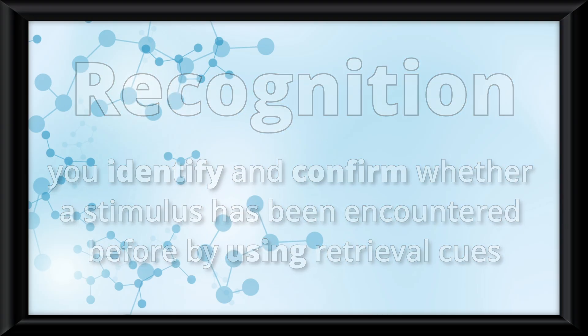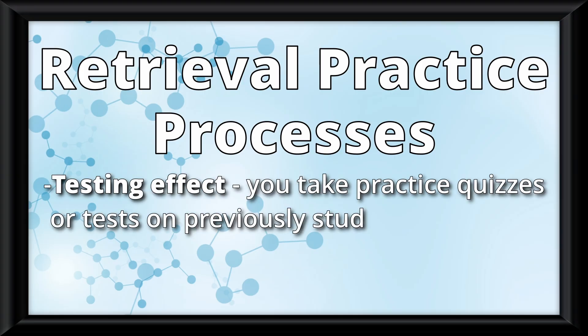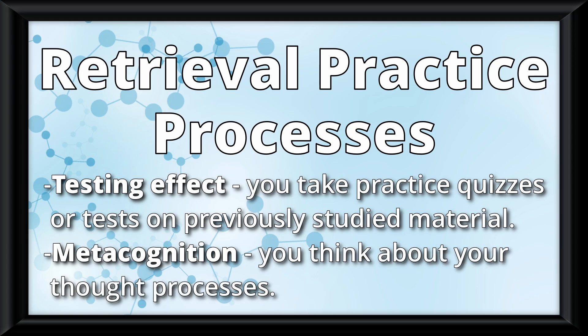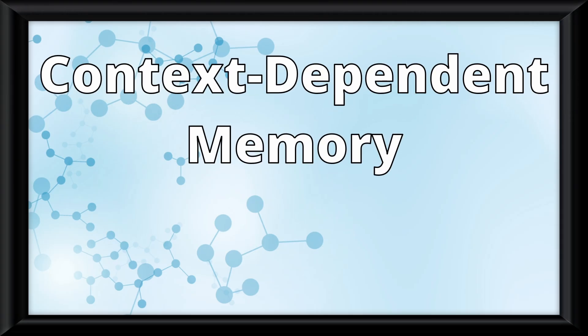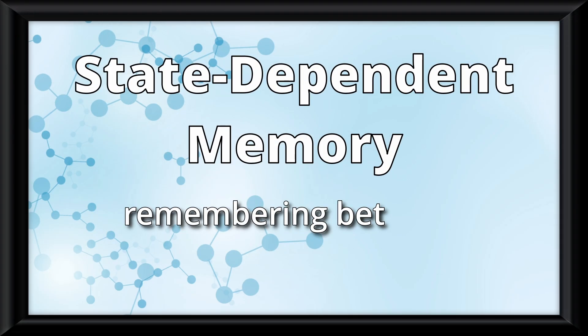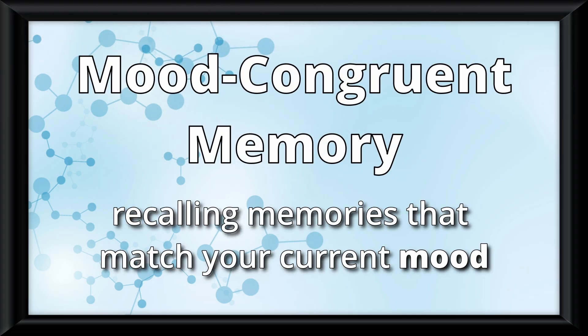You will have more successful retrieval if you use specific retrieval practice processes, like the testing effect where you take practice quizzes or tests on previously studied material, or metacognition, where you think about your thought processes. Both of these are proven ways to better retrieve memory. Retrieval can also be improved by context dependent memory, which is remembering better in the same environment, state-dependent memory, which is remembering better in the same physical state, and mood-congruent memory, which is recalling memories that match your current mood.